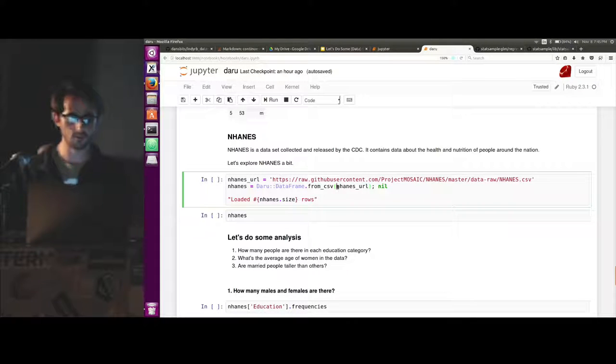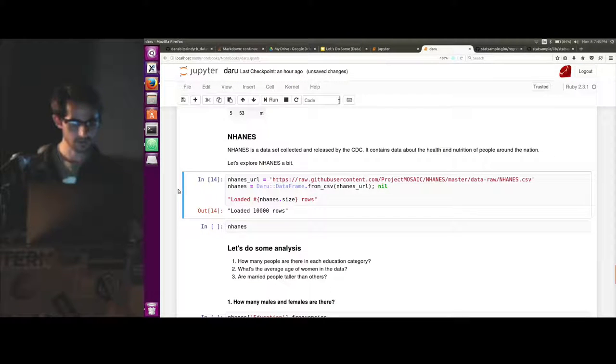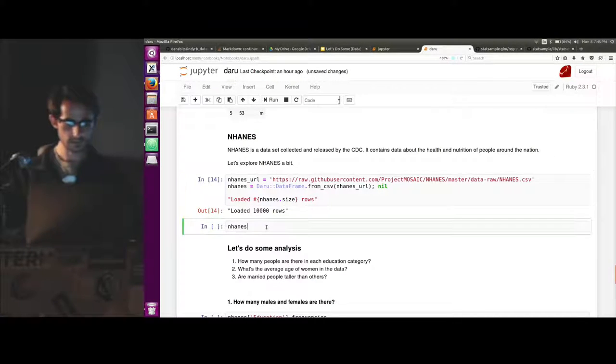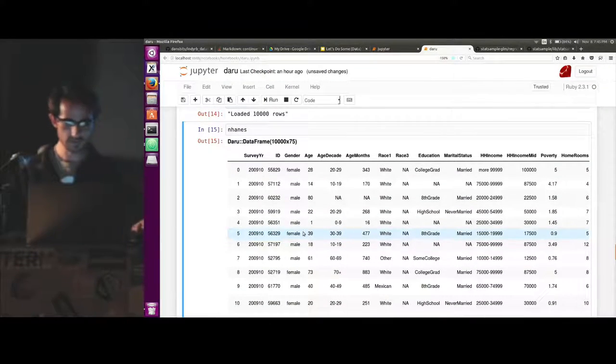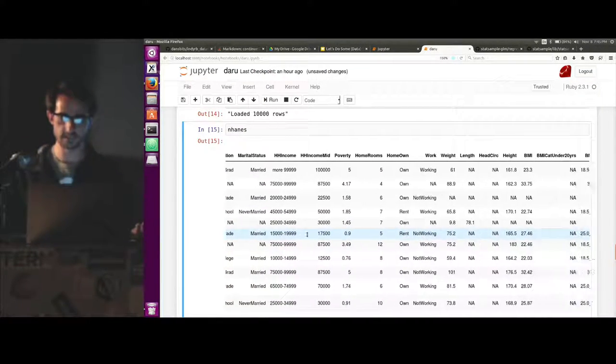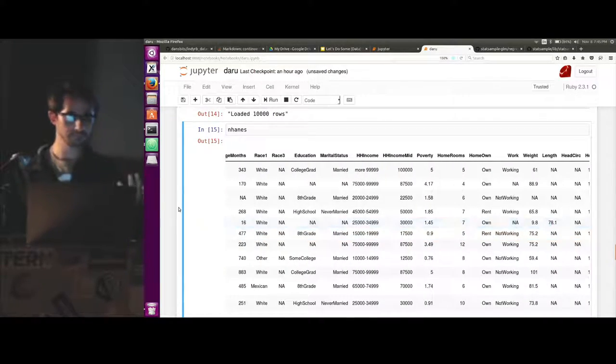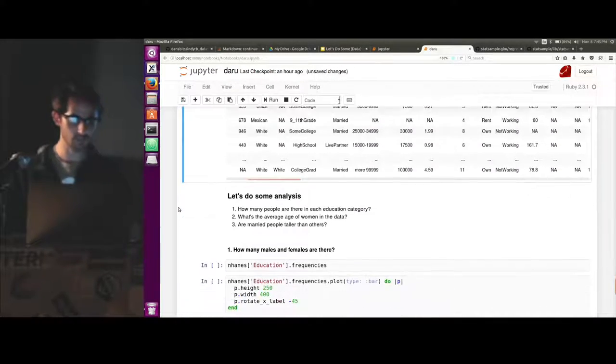So you can, if you say Daru data frame from CSV, you can give it a URL or a file path or a file object or just about anything, and it will try to figure out what you're trying to do. So if we give it a couple of seconds, we should get a bunch of data back. So we got 10,000 rows, and that looks something like this. So we have 10,000 people represented in our data set with a whole bunch of data.